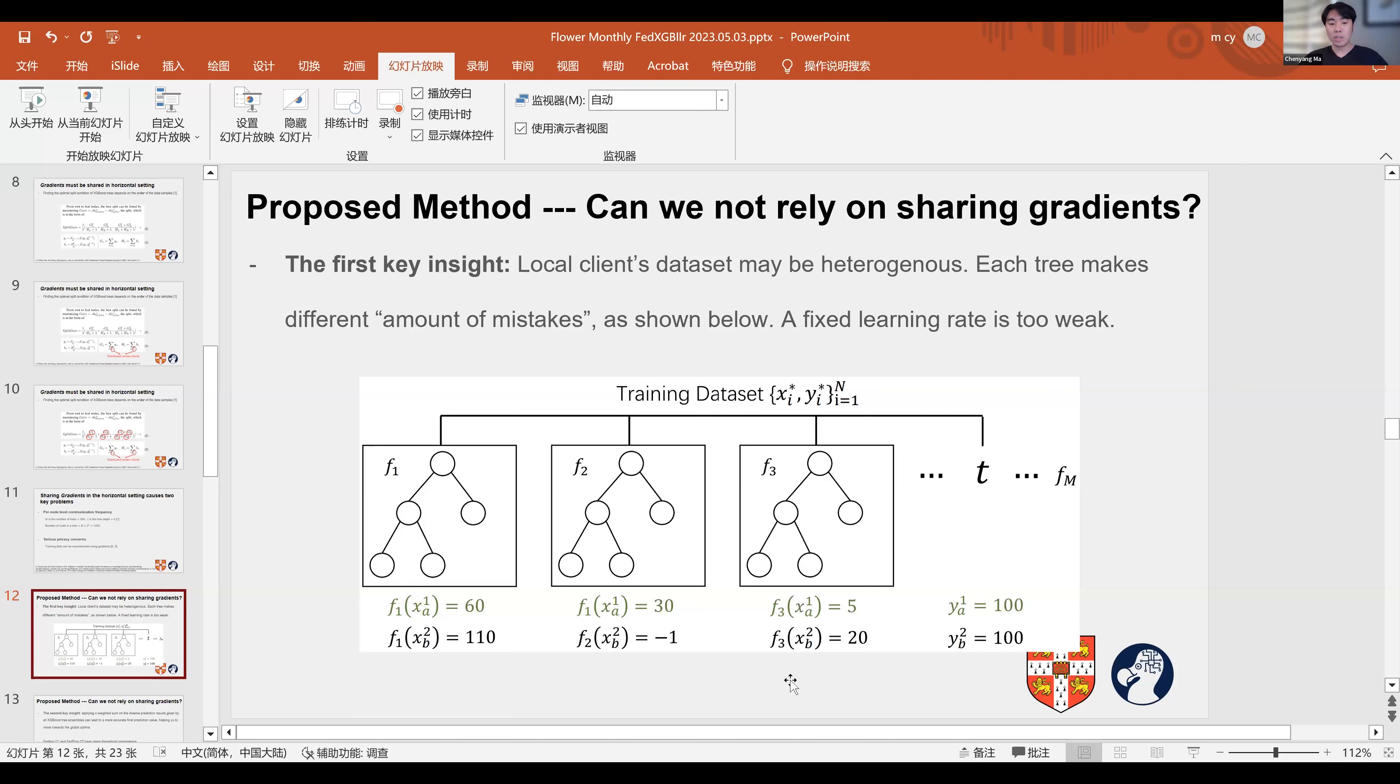In this work, we ask the fundamental question: is it possible not to rely on the sharing of gradients and Hessians to construct a horizontal federated XGBoost? In this way, we can simultaneously decrease the per-node level communication frequency and boost privacy protection. We find this to be possible by formulating two important insights.